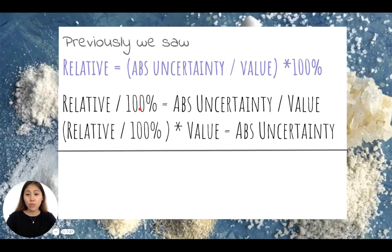So as you can see, after dividing both sides by a hundred percent and then multiplying by value, we are able to isolate absolute uncertainty to one side of the equation.